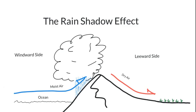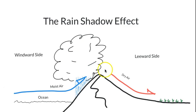This illustration summarizes the rain shadow effect, which is very important for the formation of deserts in North America. Moist air coming off the Pacific has to rise up and over mountains. As it does so, the air expands and cools, eventually condensing to form clouds, which yield rain. The air then descends over the other side of the mountains, at which point it is dry and warms as it descends.